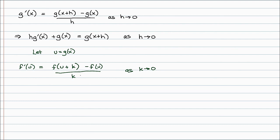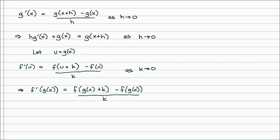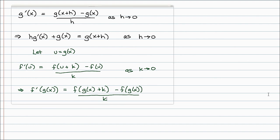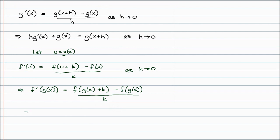This implies that f prime at g of x is equal to f of g of x plus k minus f of g of x, all over k. We're going to use that. I'll multiply both sides by k and solve for f of g of x plus k, giving us that f of g of x plus k equals k times f prime of g of x plus f of g of x.